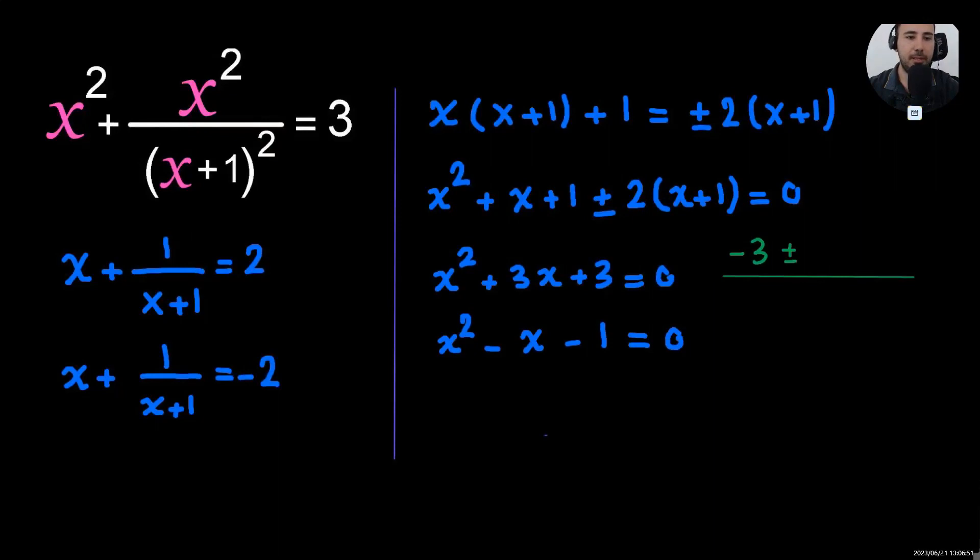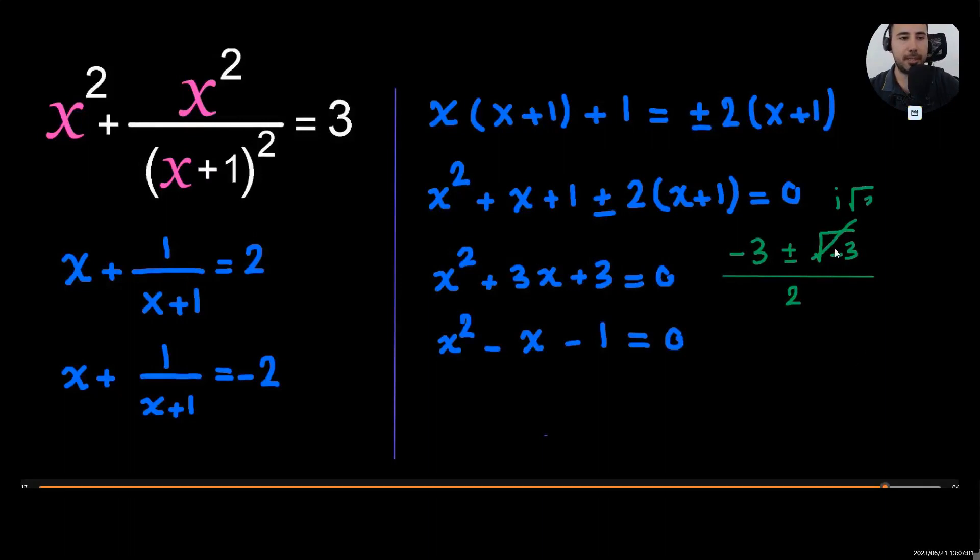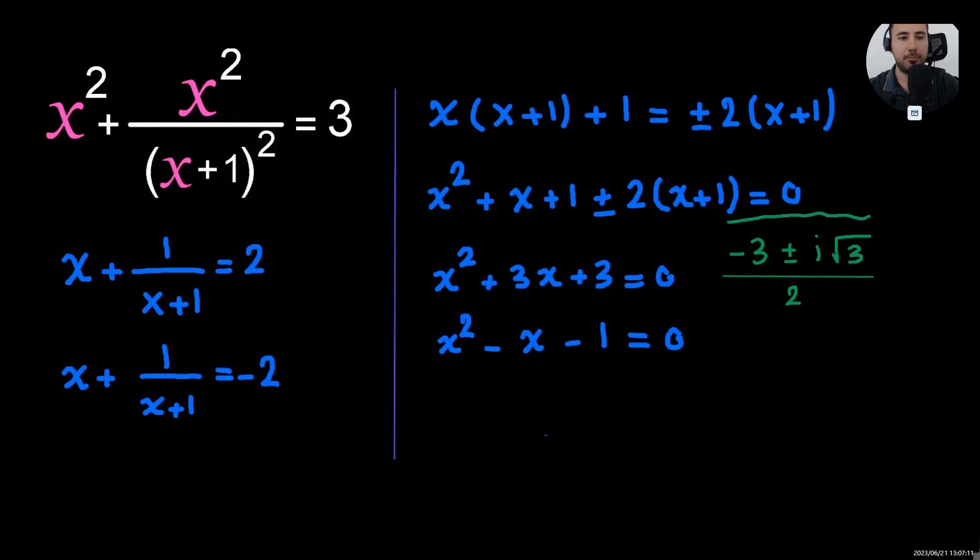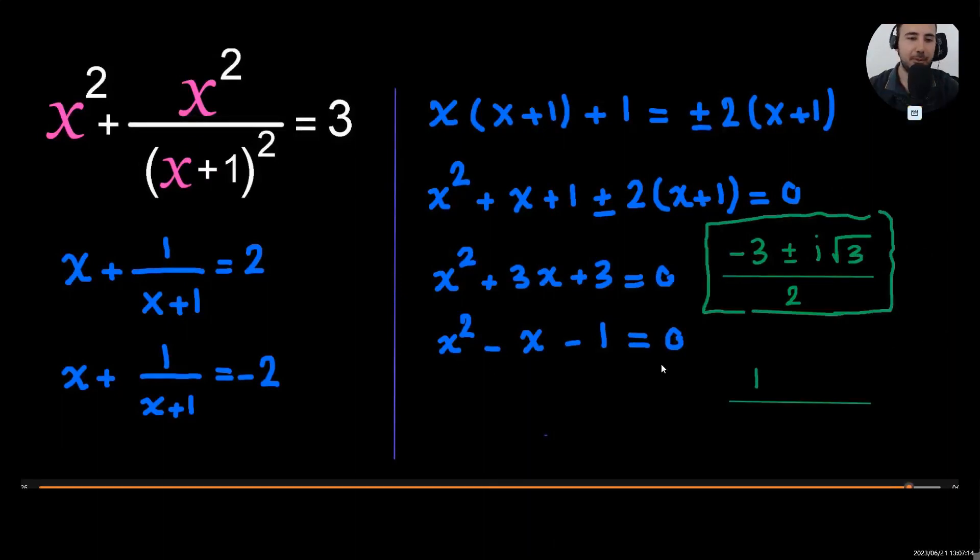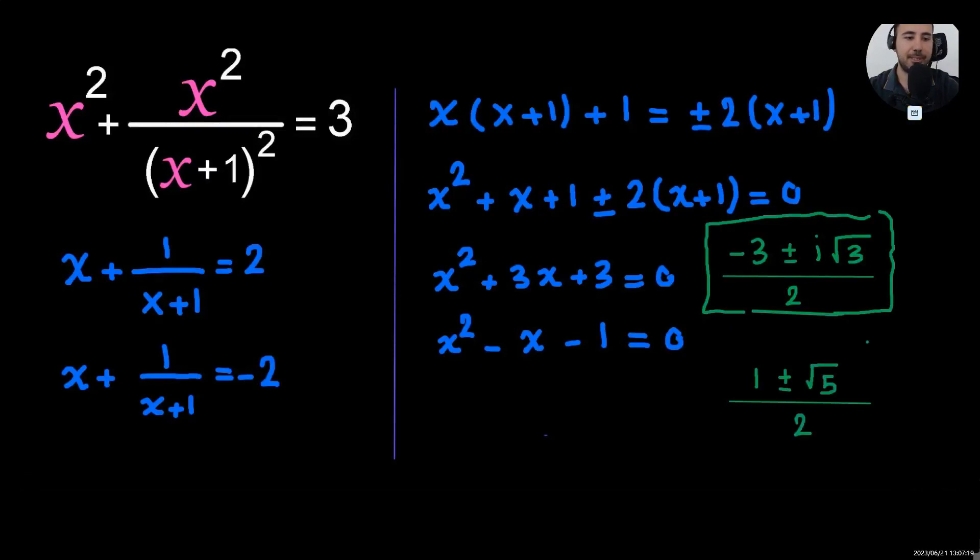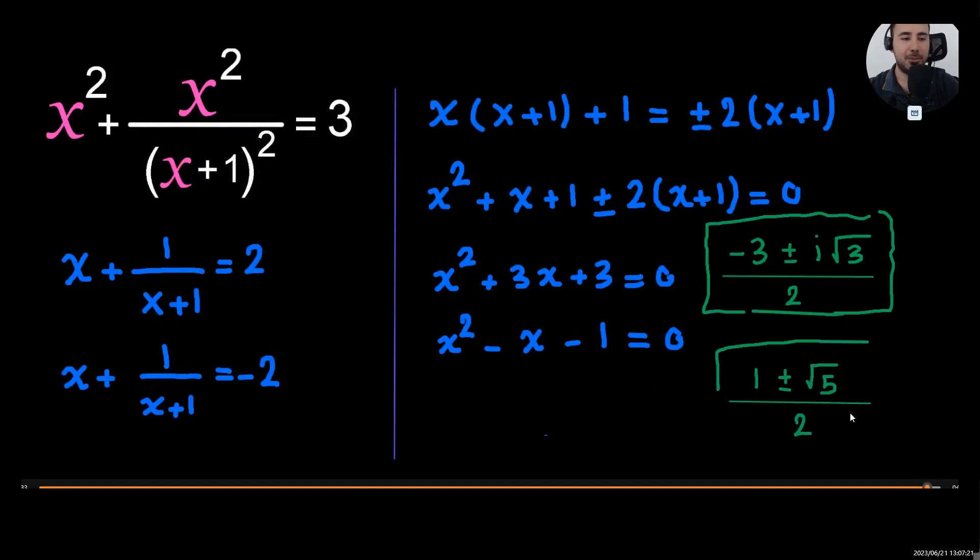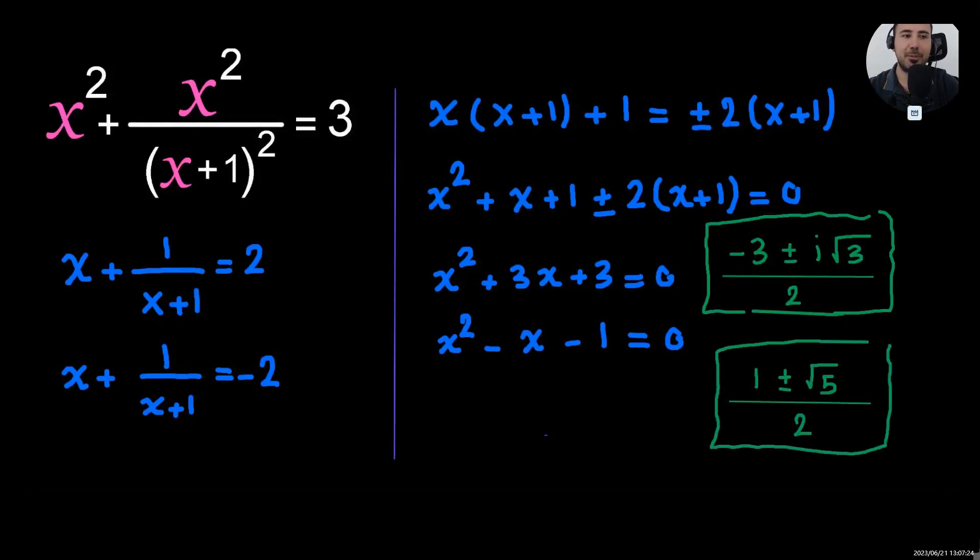Quadratic formula, negative b plus minus the square root of b squared minus 4ac over 2a. So this part, because this is negative, it's going to be an imaginary complex solution. The last equation will give us two real solutions again. This is the two real solutions. So I hope you found this video useful. If you did, make sure you like the video.